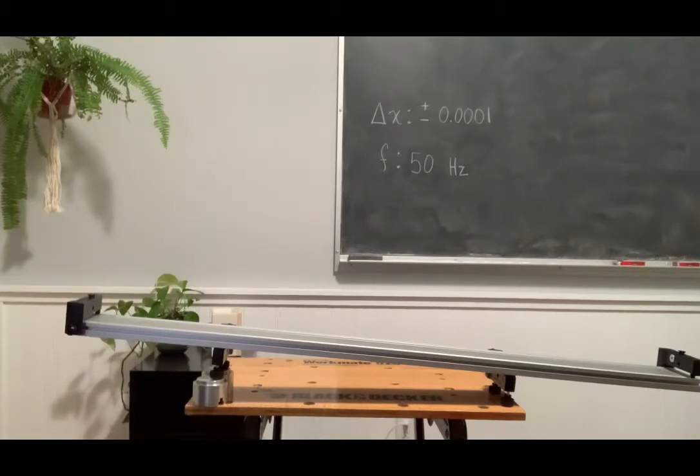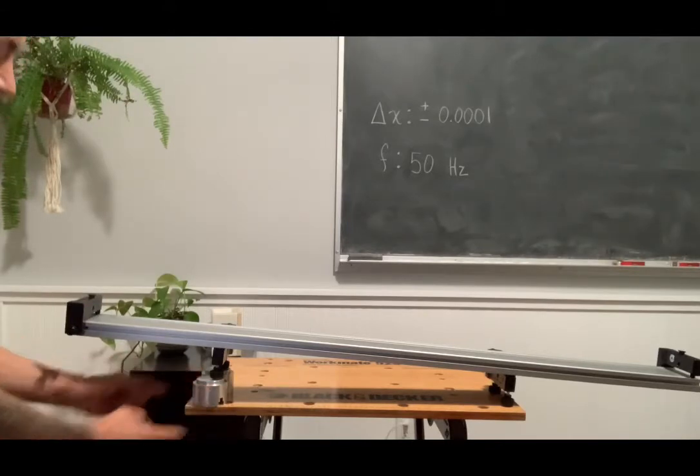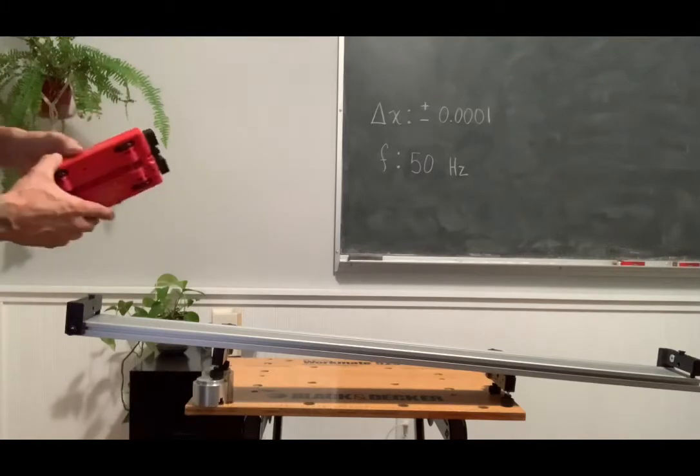We started with a level track, then I put these two risers below the feet on the left hand side so we have it at an incline. You have to determine what that incline is, and I'll give you a few measurements shortly so that you'll be able to do that.